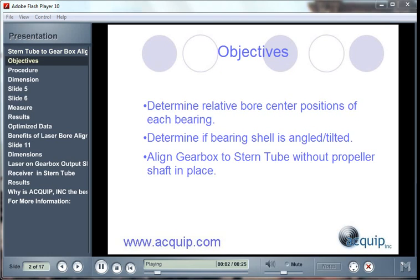During a Stern Tube to Gearbox Alignment, you have three objectives. First, you want to determine the relative bore center position of each bearing. Then, you want to determine if the bearing shell is angled or tilted to each other and the shaft line. Then, you want to align the gearbox to the Stern Tube without the propeller shaft in place.